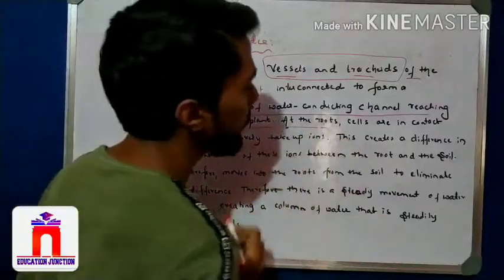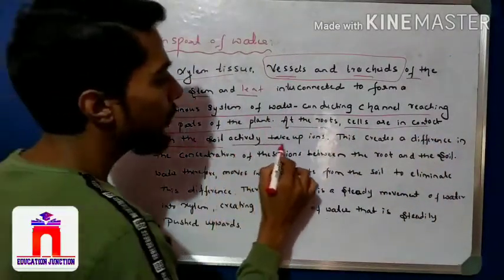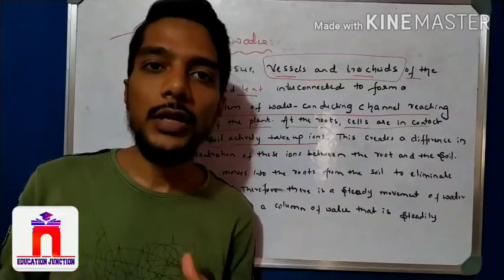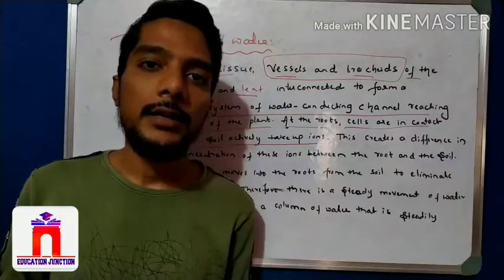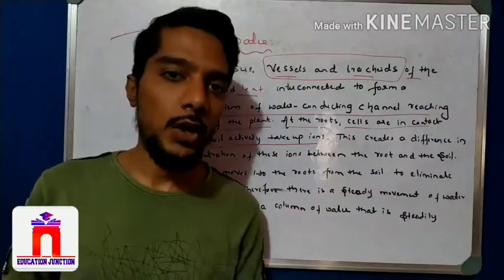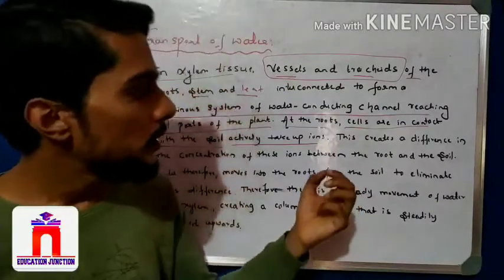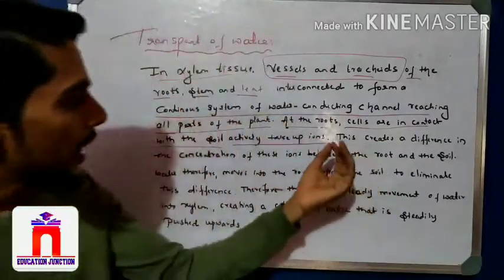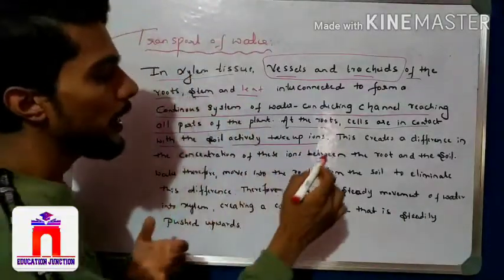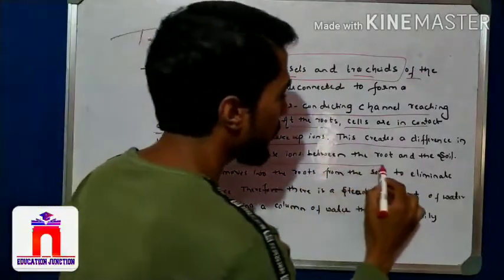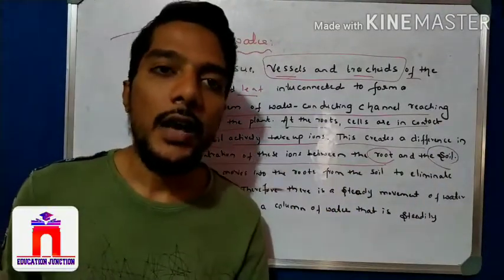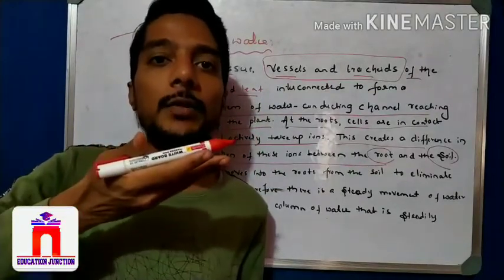At the root, the cells in contact with the soil actively take up ions — that is, water and minerals. The leaf, stem, and branches all require water, but the main part that takes water to all other parts is the roots, because roots are directly in contact with the soil. Root cells absorb water, minerals, nitrogen, phosphorus, and other minerals from the soil. This creates a difference in the concentration of ions between the roots and the soil.